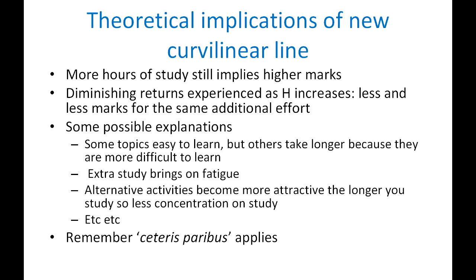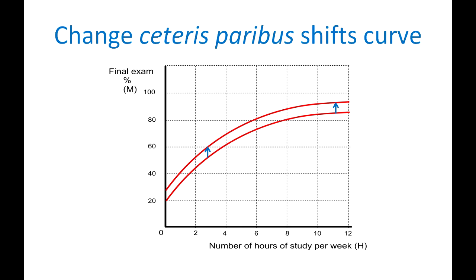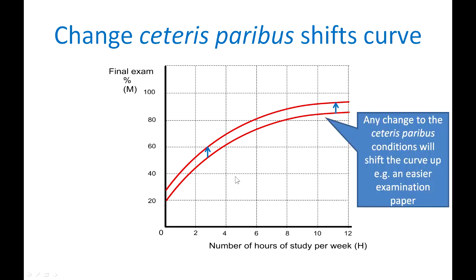Now but you must remember of course that Ceteris Paribus applies. If the Ceteris Paribus conditions change then this is going to shift the whole relationship upwards as is illustrated in this graph. So what you're saying is for four hours of study whereas before you could gain let's say 60% shown by this point, if you change the Ceteris Paribus conditions then for instance if you assume that the students that have come into the class are more intelligent, then the average score will be something like 70% for four hours of study. So any Ceteris Paribus conditions will shift the curve up or down for that matter. For instance that may also be caused by an easier examination paper.